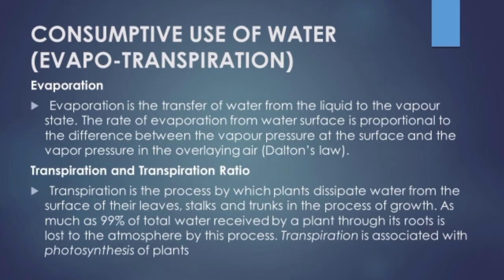Water is consumed in either of two ways: evaporation and transpiration. All the water except that going into the water table is lost through evapotranspiration — a combination of water evaporated from the soil and transpiration from plants. Transpiration is the release of water vapor into the atmosphere by the leaves of plants and trees.